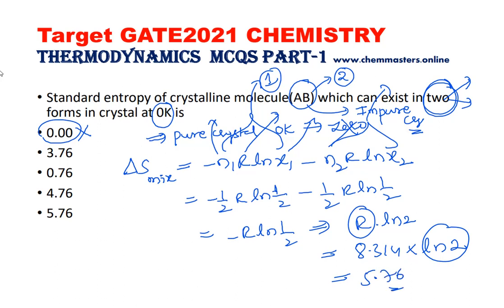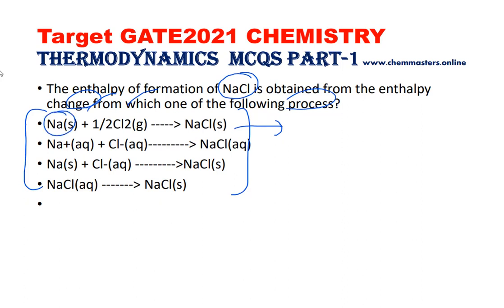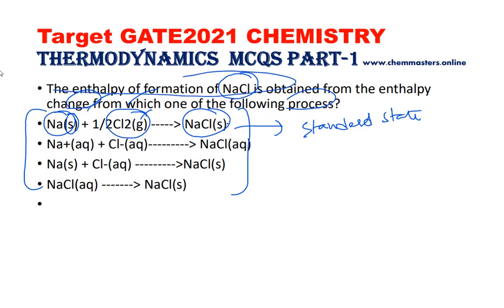Now look at the next question: the enthalpy of formation of NaCl is obtained from the enthalpy change of which of the following processes? Here we need to find the process involving standard states — each reactant and product must be in its standard state. Sodium is in its standard solid form, chlorine is in its gas form, and sodium chloride is also in its standard state, so this process leads to the enthalpy of formation of NaCl.